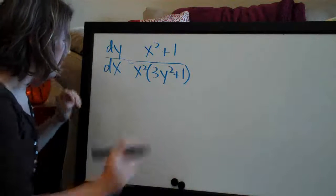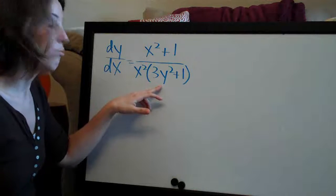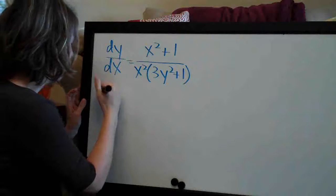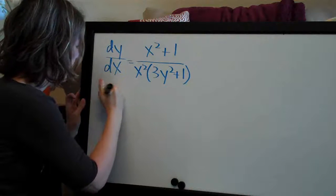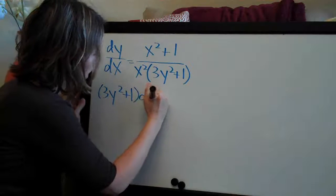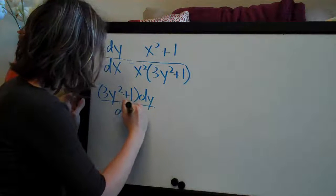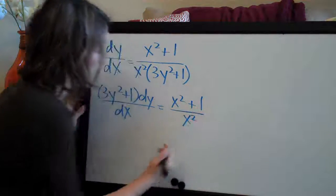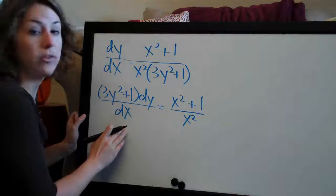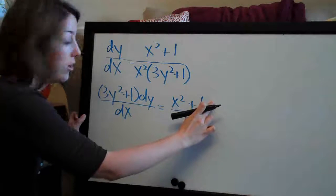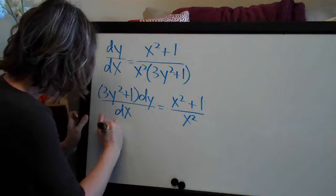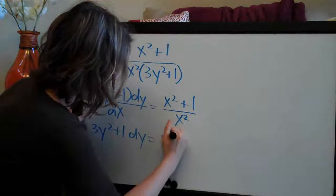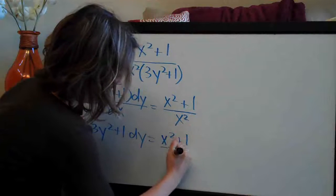The first thing we're going to do is multiply both sides by 3y squared plus 1, which will cancel 3y squared plus 1 on the right side and bring it to the numerator on the left. That gives us: 3y squared plus 1, times dy/dx, equals x squared plus 1 over x squared. Then we multiply both sides by dx, giving us 3y squared plus 1 dy equals x squared plus 1 over x squared dx.